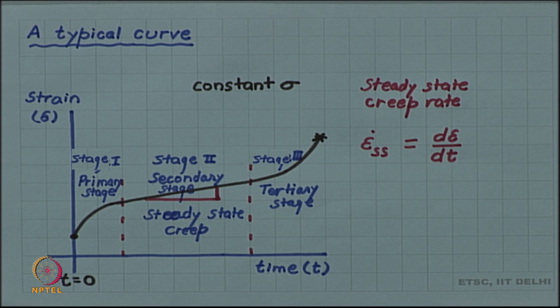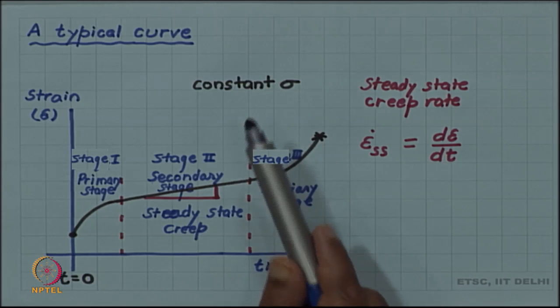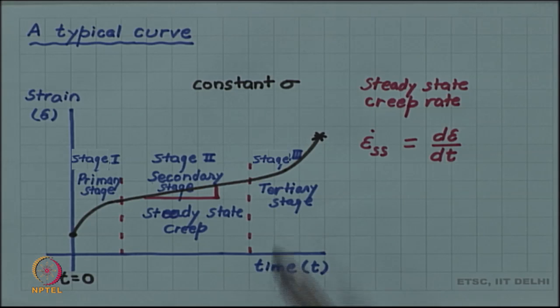Now the question is why in this case we had strain as a function of time, whereas in the previous plastic deformation studies which we had, the stress-strain curve, we associated a given strain for each stress. There time was not one of the parameters. For every stress there was a strain, but now even at a constant stress, as a function of time strain is increasing. What is the difference between these two kinds of behavior of material? One important parameter which causes this difference is the temperature.